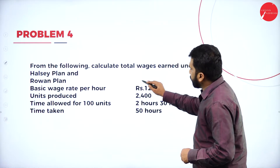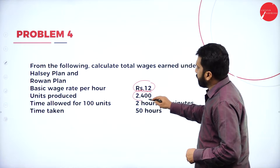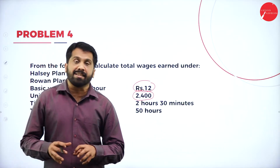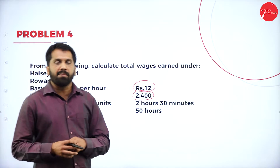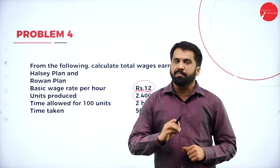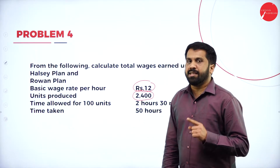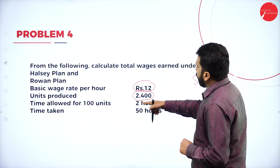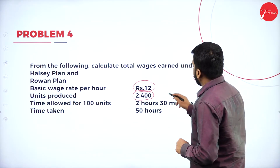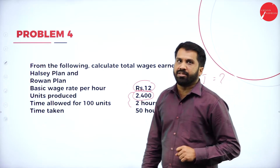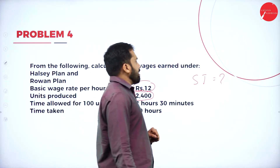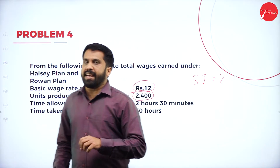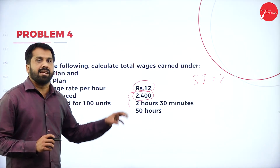The basic wage rate is 12 rupees. They have given unit produced. Remember, if unit produced is given, we are supposed to calculate the standard time ourselves — standard time is not directly given in this problem. The time allowed for 100 units is 2 hours 30 minutes. These are the pieces of information given to calculate your standard time.